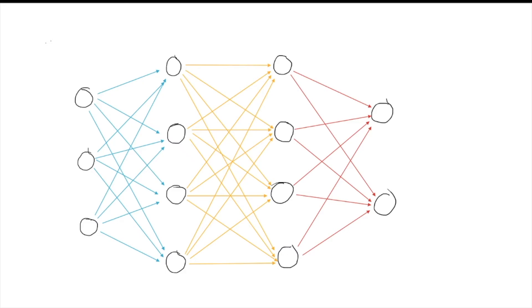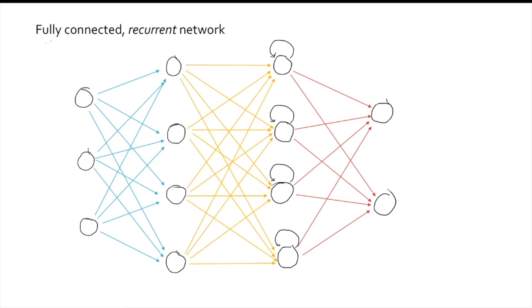Units in one layer have connections to those in the succeeding layer. In the standard network, every unit in one layer is connected to every unit in the following layer — such a network is considered fully connected. Also, processing, in the form of activation spreading, goes forward from input to output. Thus, a standard network is a feed-forward network. This is in contrast with recurrent networks, where previous outputs can be used as inputs for hidden layers. But the most common structure of an artificial neural network is that of a fully connected multi-layer network.